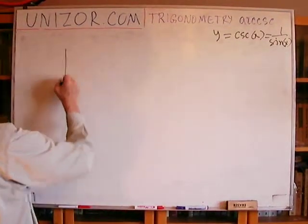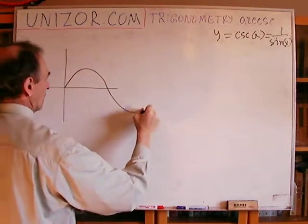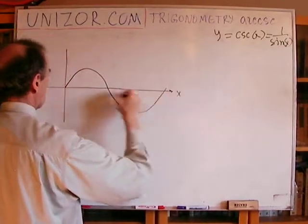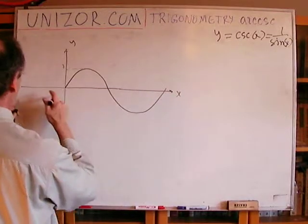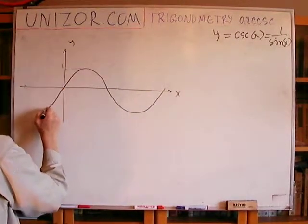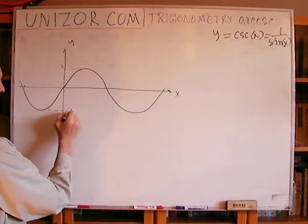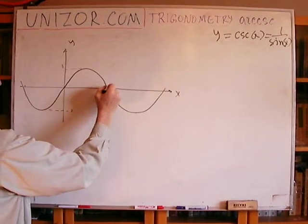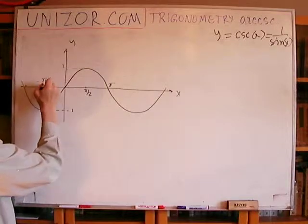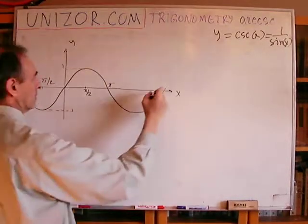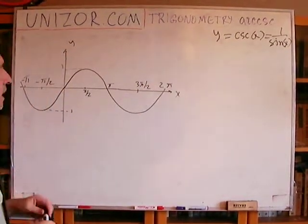Start with a sine. Sine is easy. Sine is this. Something like this. Minus 1. This is pi. This is pi over 2. This is minus pi over 2. Minus pi. 2 pi. 3 pi over 2. Okay, we start with a sine.